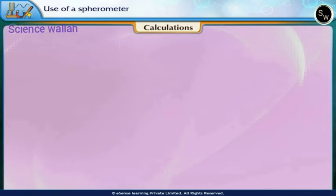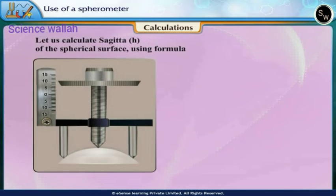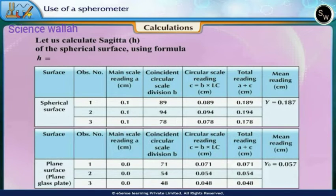Calculations: Let us calculate sagitta H of the spherical surface using the formula H = |Y - Y₀| = 0.187 - 0.057 = 0.130 cm.